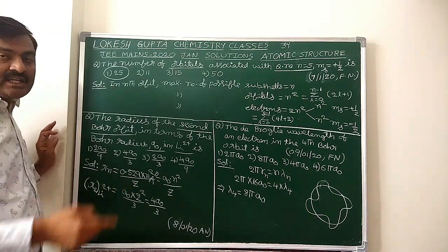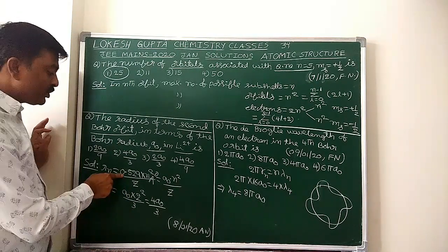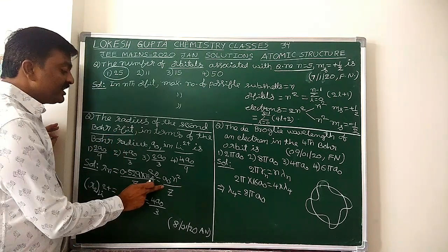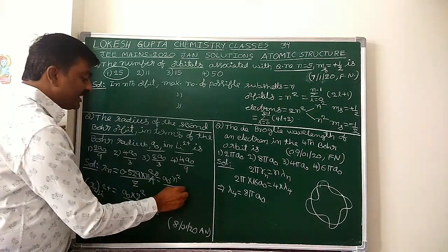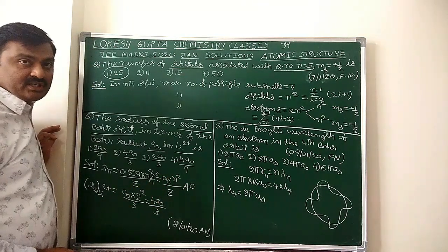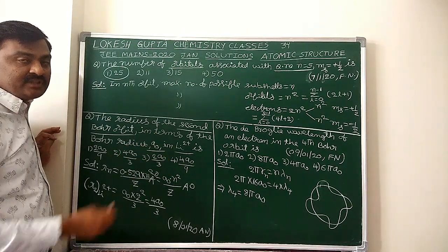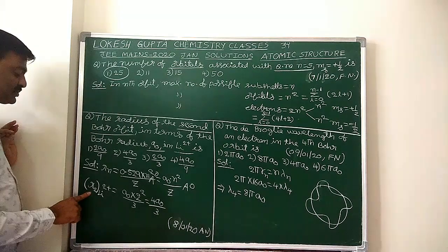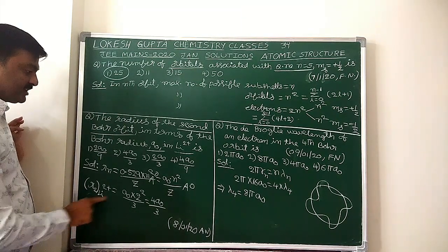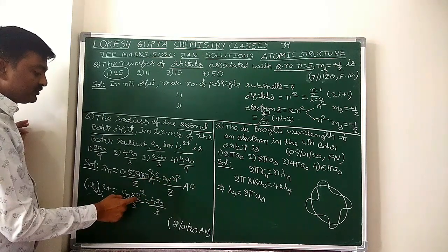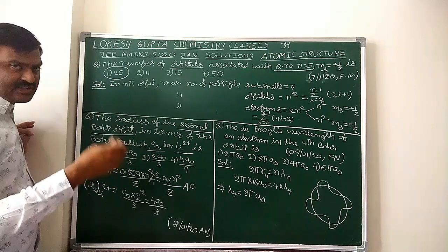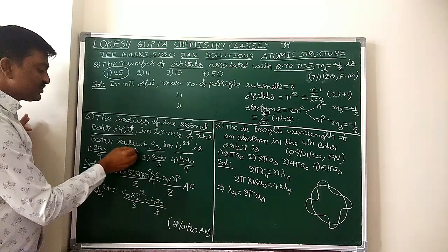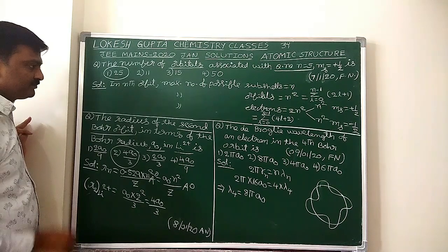The formula for radius of the nth orbit is n²h²/(4π²mZe²). Substituting constants: r = 0.529 × n²/Z angstrom units. The radius of the first orbit in hydrogen is 0.529 Å, which we take as Bohr's radius A₀. So r = A₀ × n²/Z. For the second orbit in Li²⁺: n=2, Z=3 (atomic number doesn't change for Li²⁺). So r = A₀ × 4/3 = 4A₀/3. Answer is the second option.